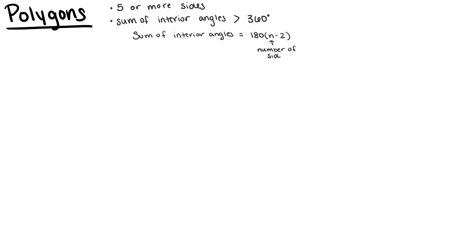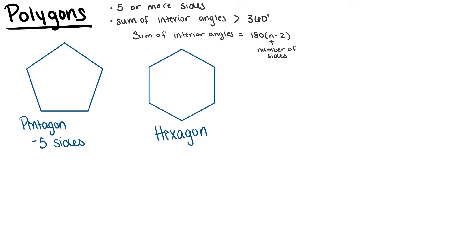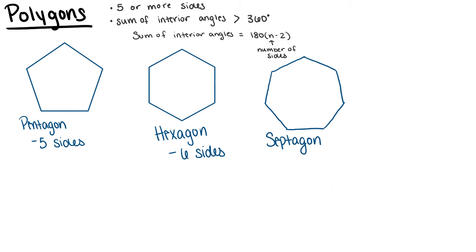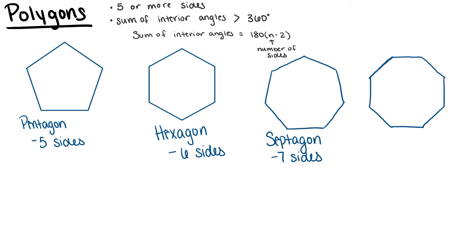Some examples of polygons are pentagons, which have five sides; hexagons, which have six sides; septagons, which have seven sides; and octagons, which have eight sides. This list is not limited to these four. You can create a polygon with as many sides as you can think of, and it will have a name. For example, a nine-sided figure is called a nonagon, and a ten-sided figure is called a decagon.